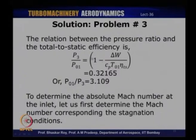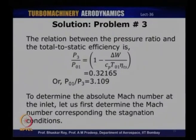For the pressure ratio: using the total-to-static efficiency definition η_ts = (T01 − T03)/(T01 − T3s), the numerator is Cp × delta_T from the power output, and the denominator is expressed via the isentropic relation in terms of the pressure ratio. Solving gives P3/P01 = 0.32165, so the turbine pressure ratio P01/P3 = 3.109.